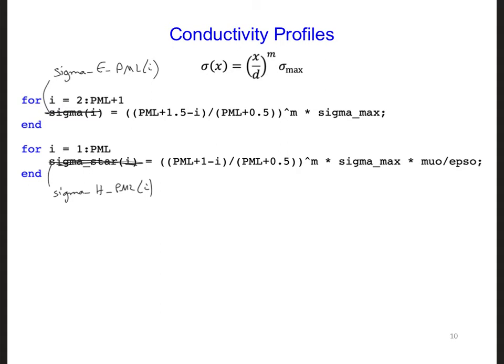We're making this distinct name change for the sigmas because, first of all, sigma E and sigma H only have values in the PML. Whereas before, the sigma and sigma stars were physical values that could exist anywhere in the grid where there was a lossy material.